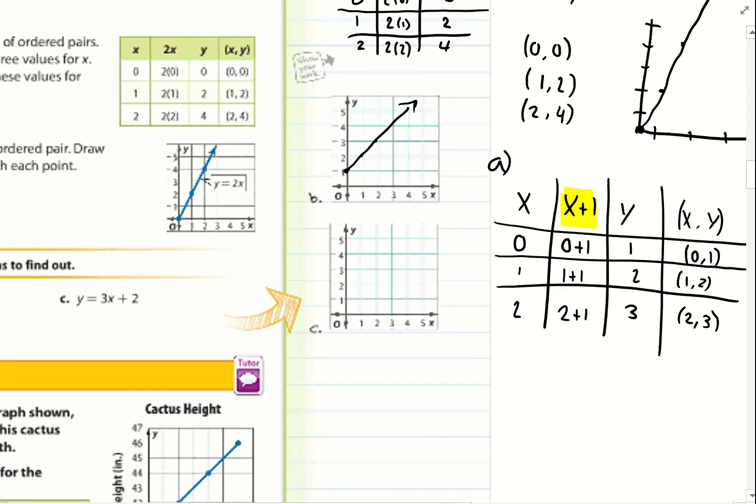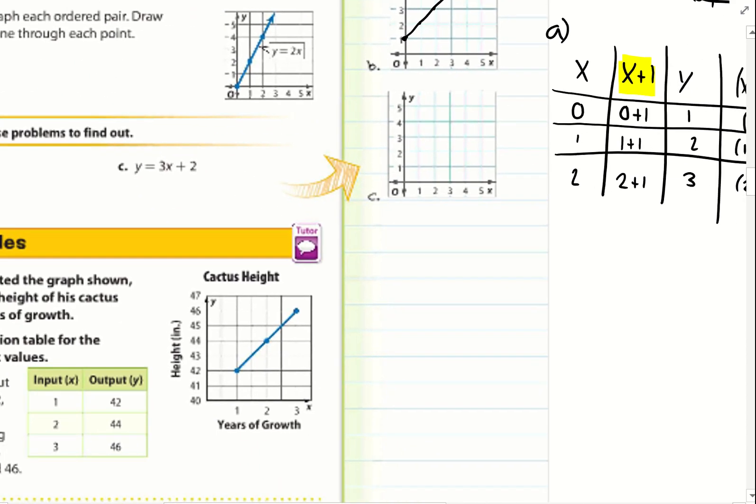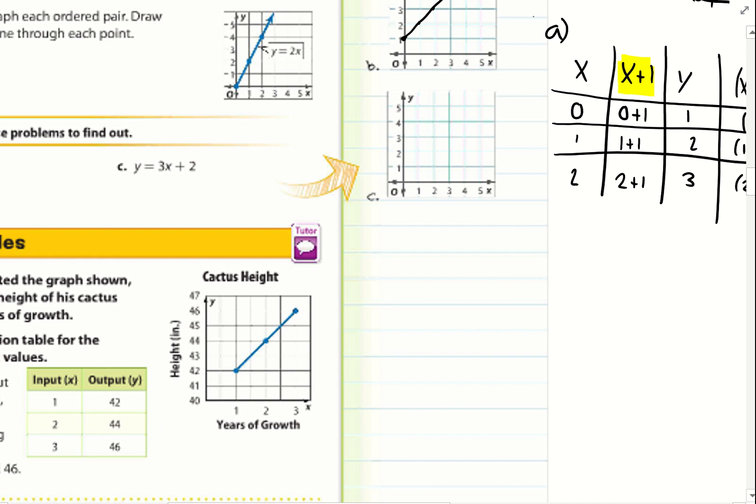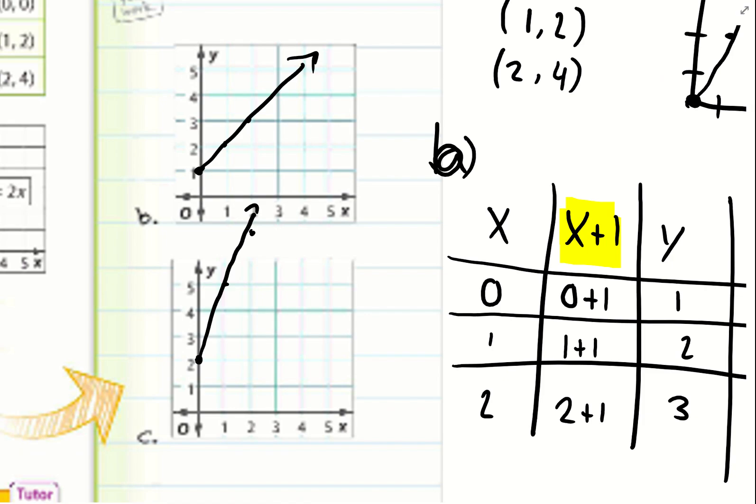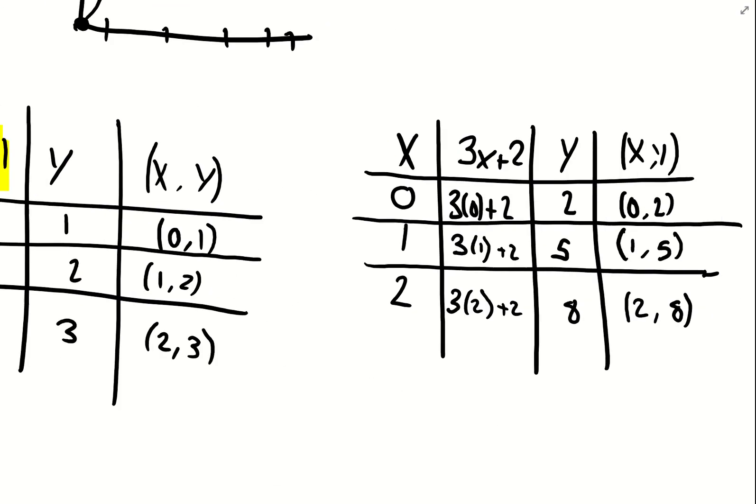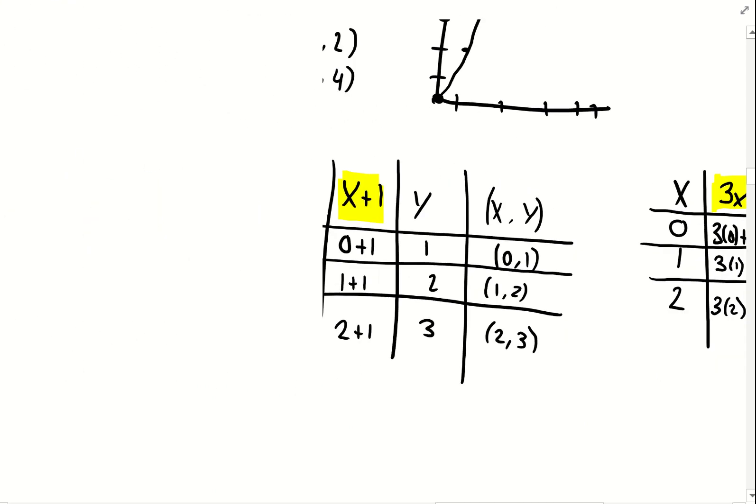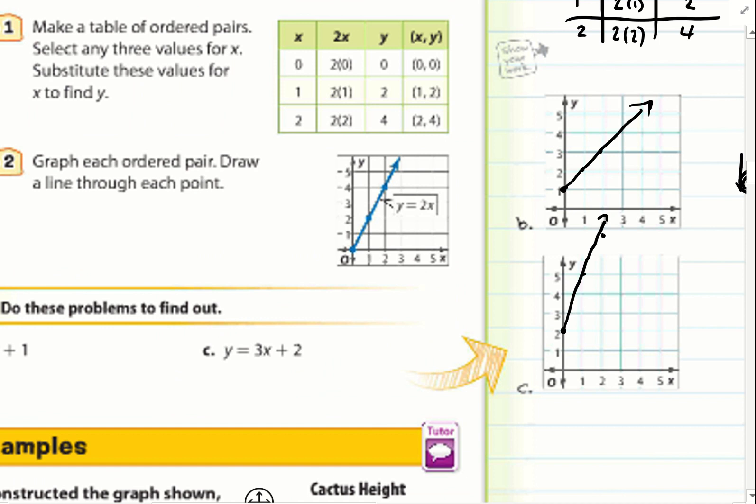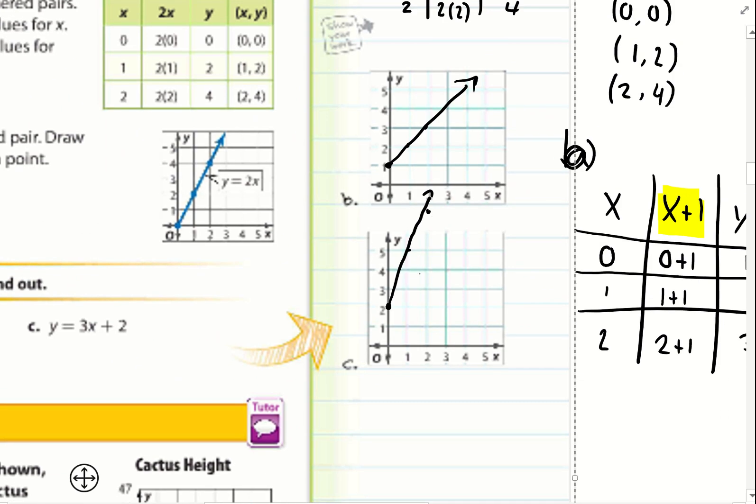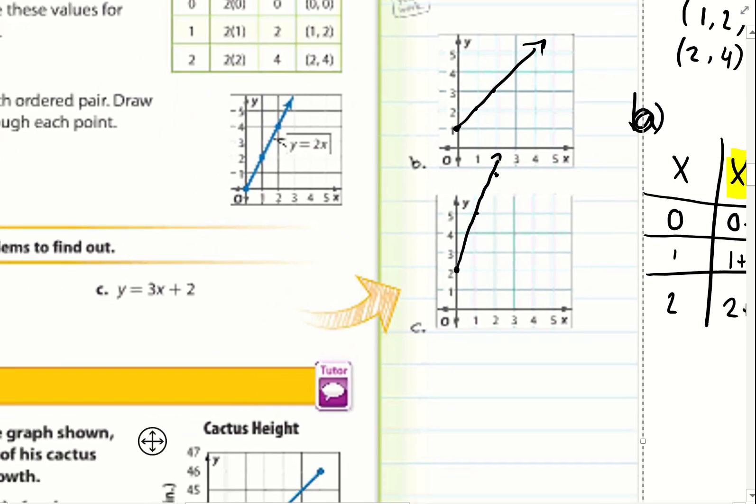Now that I did b with you guys, go ahead and try c by yourselves. For c, my function is 3x plus 2. And I plugged in as my x's, 0, 1, 2. As my y's, I got 2, 5, and 8. So I have 0, 2, 1, 5, and 2, 8. And on my graph, 8 is above my graph, but I just kind of estimated. So I have a straight line for my linear function.